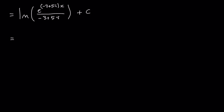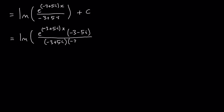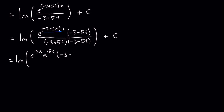Now what I'm going to do is rationalize that denominator. I'm going to multiply the term in the imaginary component by negative 3 minus 5i — the complex conjugate of my denominator — because then I'll have minus 3 plus 5i times minus 3 minus 5i, which is a difference of two squares. That way I can get rid of the imaginary component in the denominator. So I get the imaginary component of e to the negative 3x, and expanding out the bracket: e to the i5x times minus 3 minus 5i over minus 3 squared is 9, and minus 5 squared times i squared is plus 25. And I have that plus c.